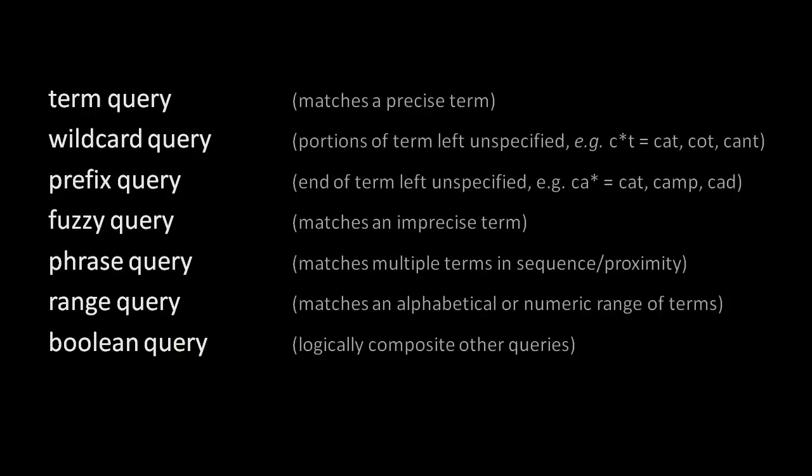If we record term positions in our index, we can also perform phrase queries. A phrase query is a query in which we match on multiple terms occurring in a certain order or within a certain proximity of each other. Most commonly, phrase queries are used to find a specific sequence of adjacent terms. For example, we could perform a phrase query for the terms George and Washington adjacent to each other and in that order, such that a query will return the documents that contain the whole phrase George Washington, not just George and Washington separately or in the opposite order.